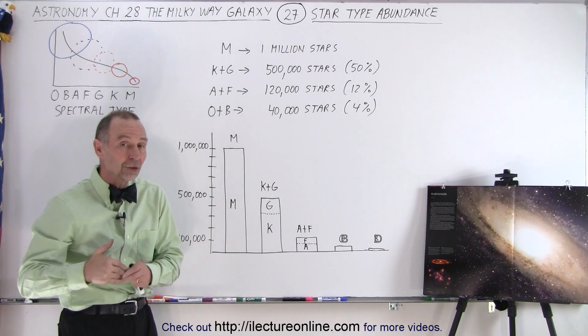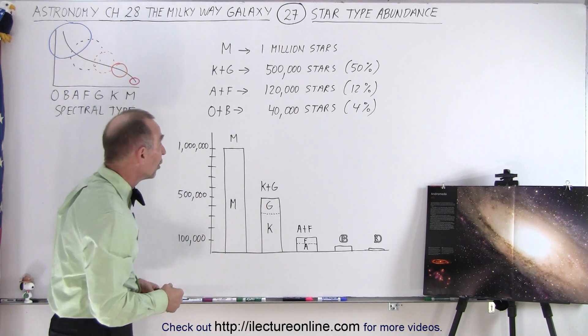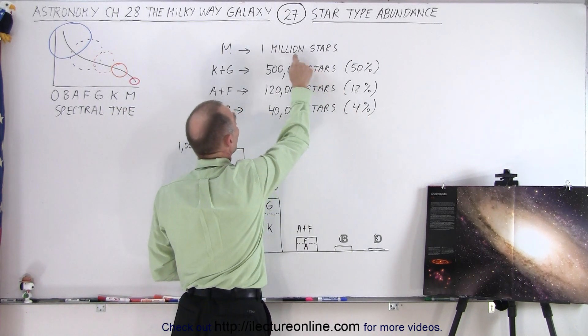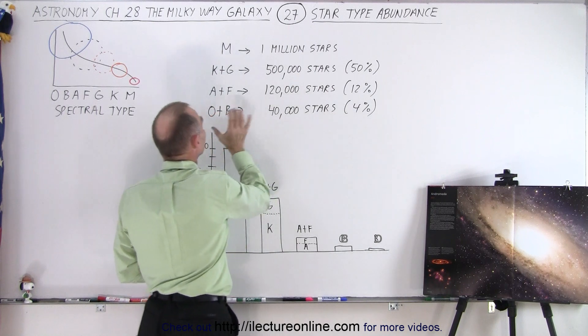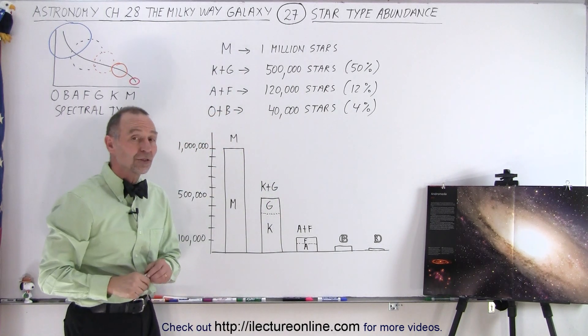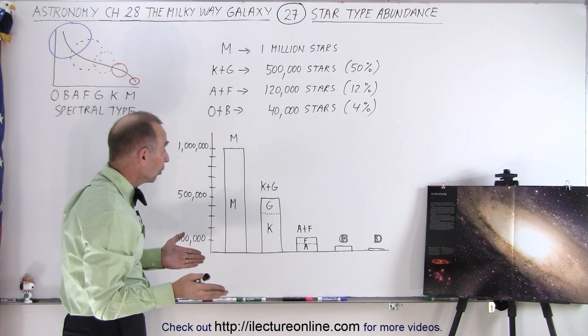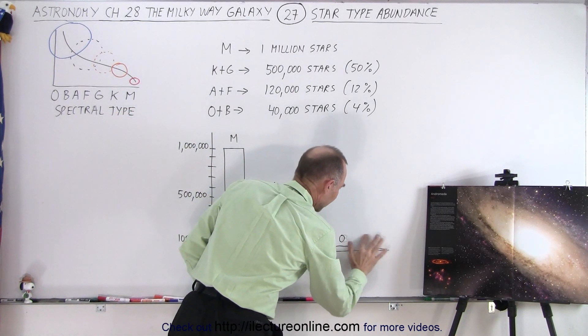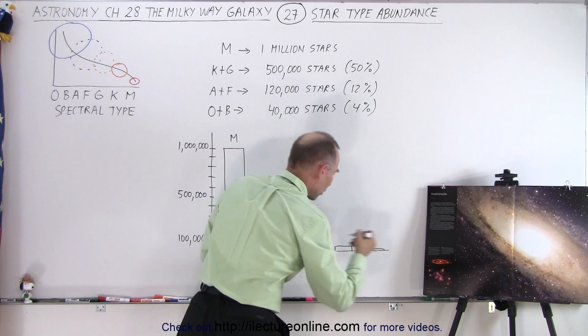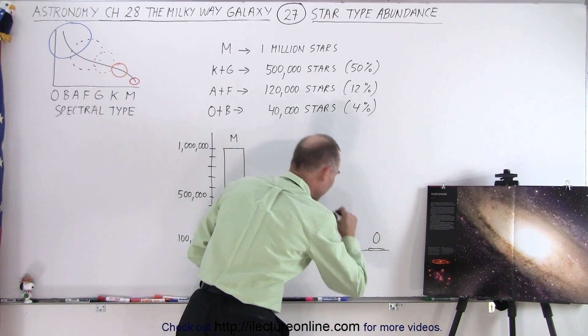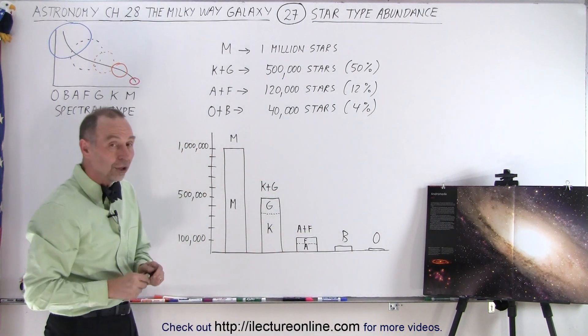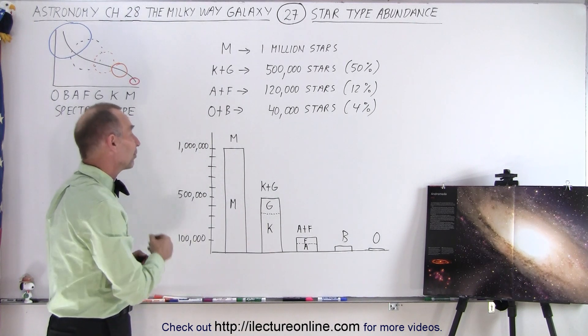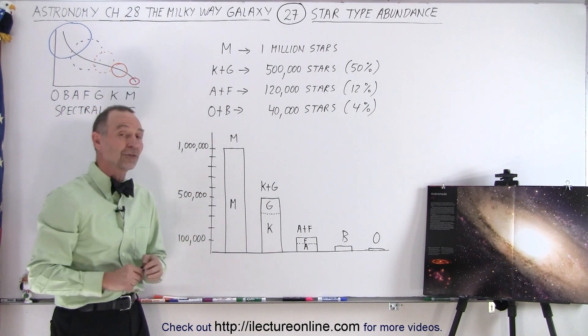And then when we go down to the O- and B-type stars, notice there's only about 40,000 or 4% of the 1 million stars can be O- and B-type stars. And again, between those two, there's far fewer... Oh, I got this reversed, don't I? Let me reverse that. We have the O's over here and the B over here. Notice there's virtually no O-type stars compared to all the other types of stars, especially the M-type stars.